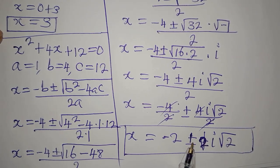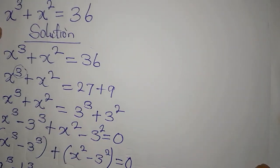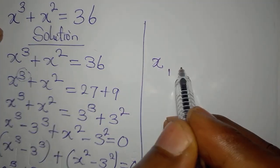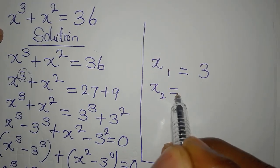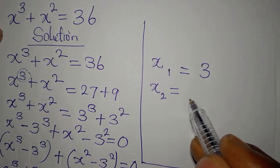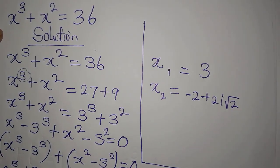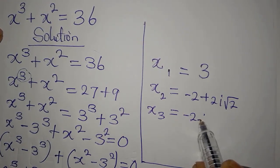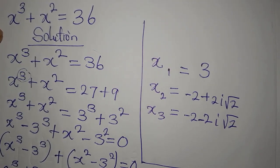Let's bring the three solutions together. The first value is x₁ equals 3. The second value is x₂ equals minus 2 plus 2i√2. The third solution is x₃ equals minus 2 minus 2i√2. These are the three solutions to x³ plus x² equals 36.